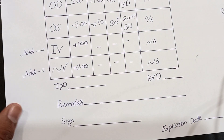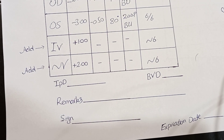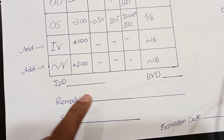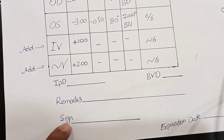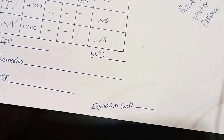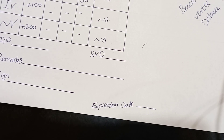Remarks is an important field where you write what you have done with the patient, your thoughts about their disorder or refractive error. After remarks comes the signature of the optometrist or ophthalmologist, and finally the expiration date — after which the prescription card can no longer be used.